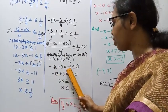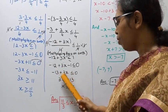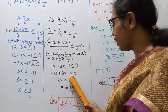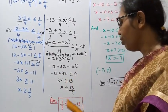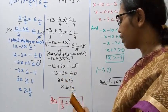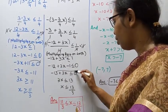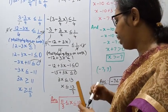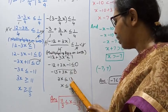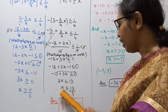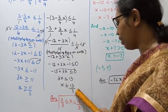Minus 12 minus 1 gives minus 13, so minus 13 plus 3x less than or equal to 0. Therefore 3x less than or equal to 13, which gives x less than or equal to 13 by 3.